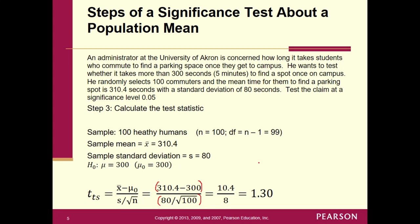So what does that mean? The x-bar that we got from our sample is 1.30 standard errors above the value in the null hypothesis. That's our interpretation and it hasn't changed.